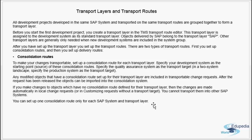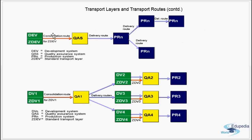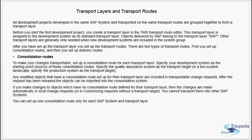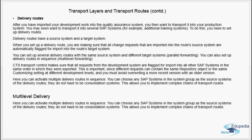You can set up only one consolidation route for each SAP system and transport layer. So from development to QA, you have only one consolidation route.